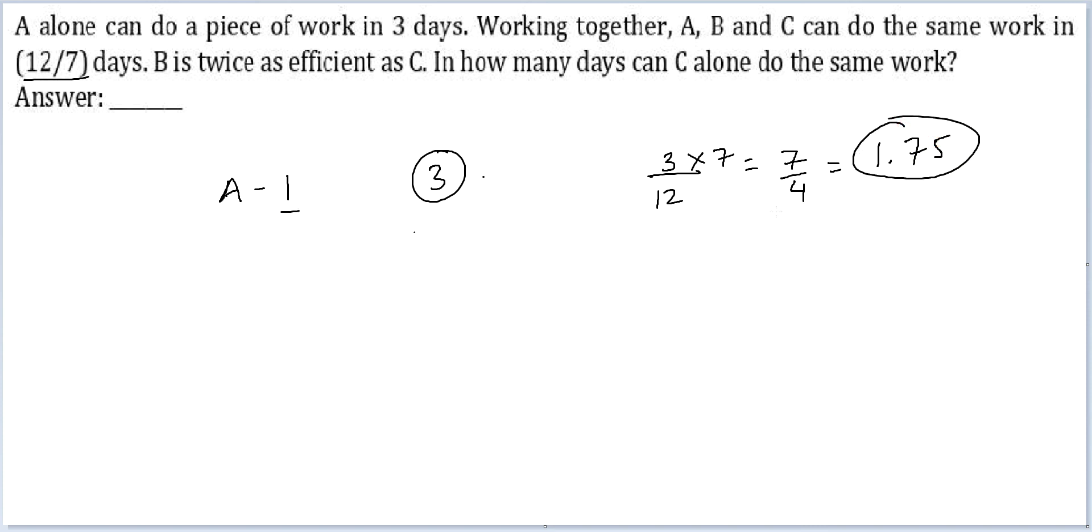A's individual efficiency was 1. A plus B plus C is equal to 1.75. And we are told B is twice as efficient as C. So B should be equal to 0.5. C should be equal to 0.25. Efficiency of C has been identified as 0.25.